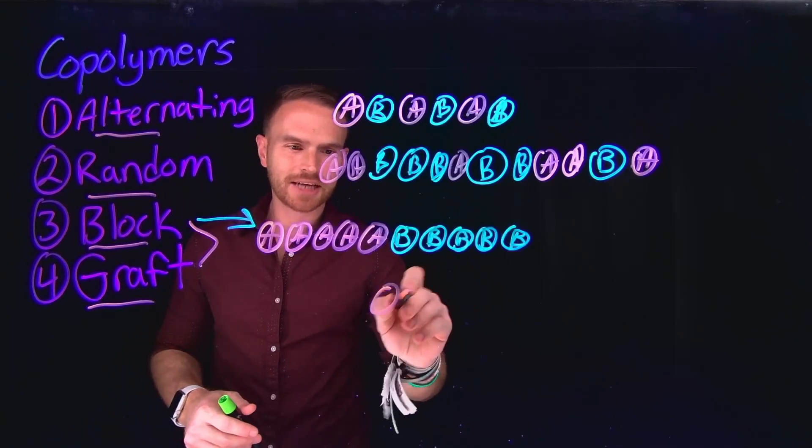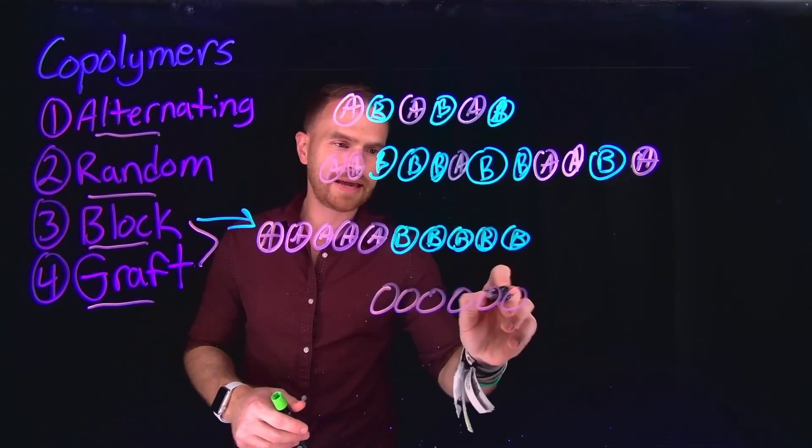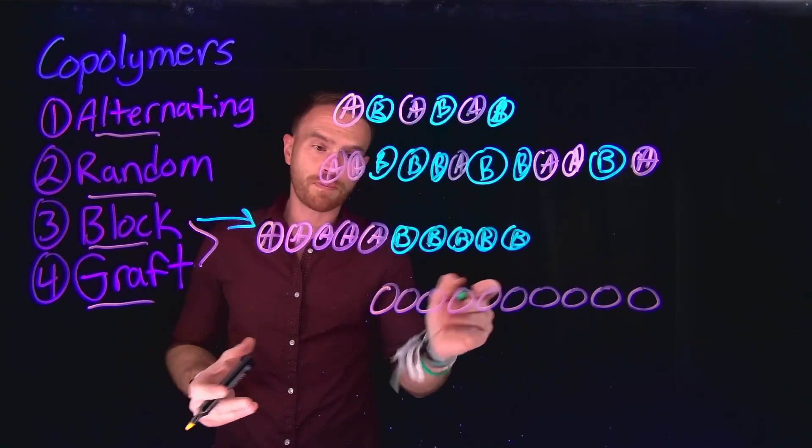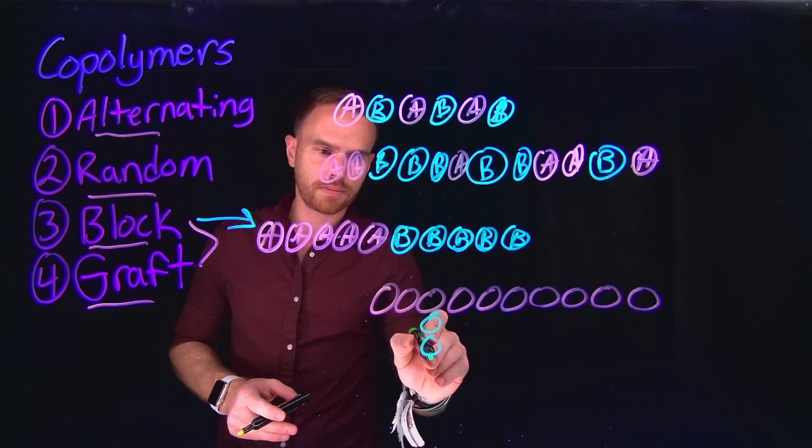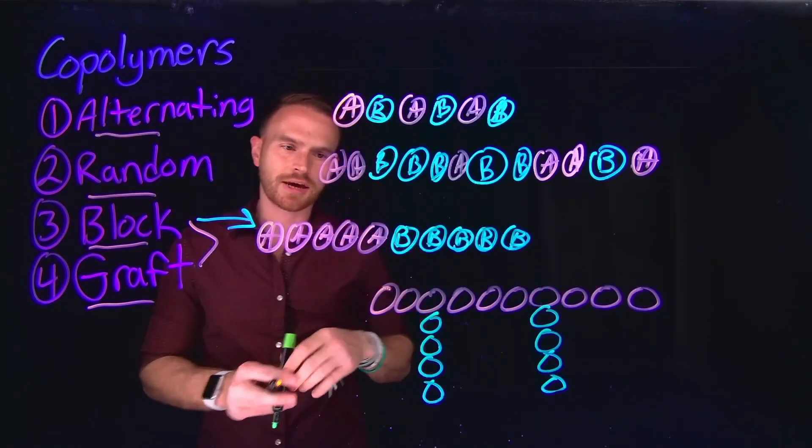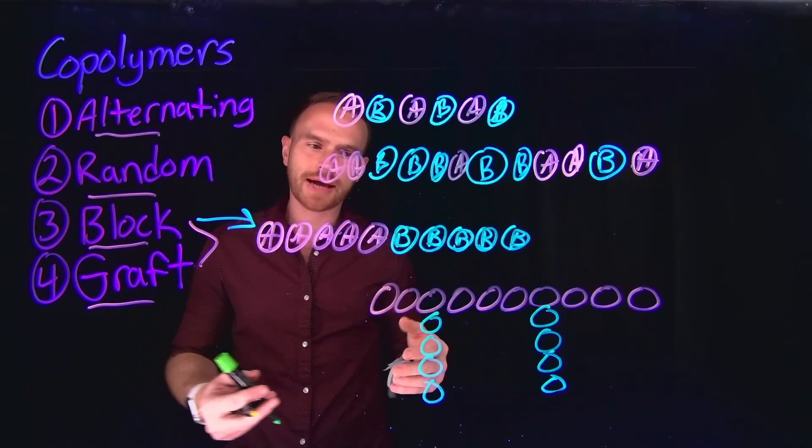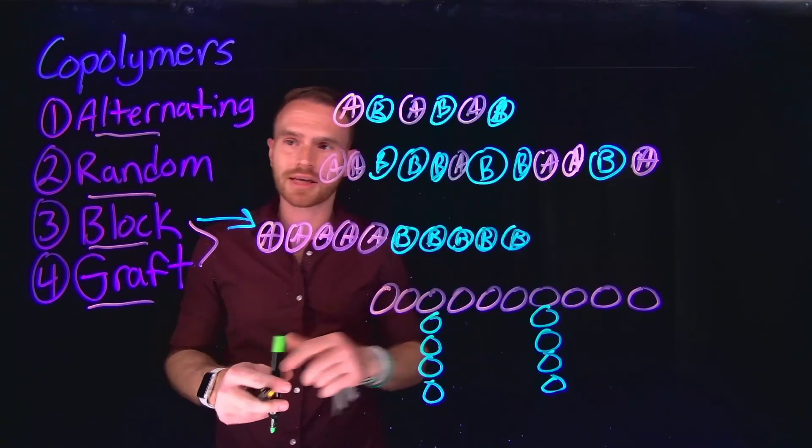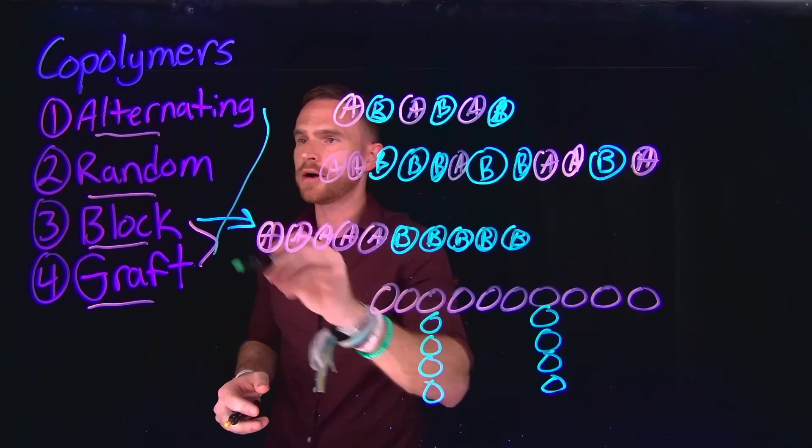If instead the attachment of the AB homopolymers allowed the polymers to branch, this would be what is called a graft polymer, where these different units can combine at different locations. And in fact, the orientation and the connection points of different polymers often gives rise to the way that we classify them when we're talking about copolymers.